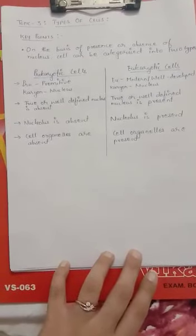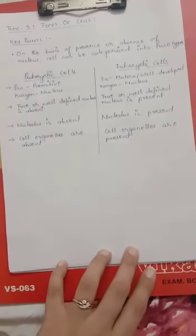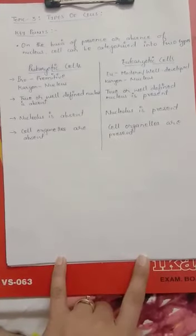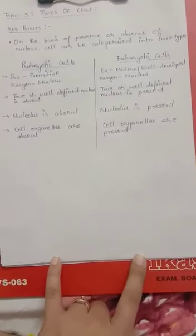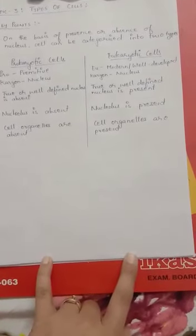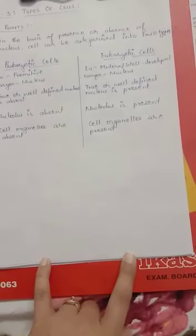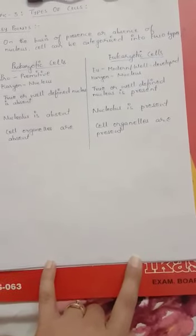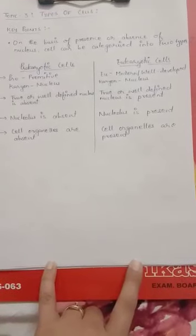All the other parts of the cell are called cell organelles — small compartments that help the cell to function. Cell organelles such as mitochondria, endoplasmic reticulum, Golgi apparatus, plastids, and lysosomes are present in eukaryotic cells.